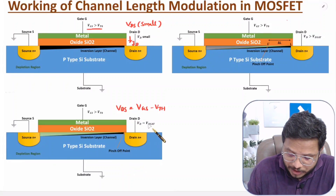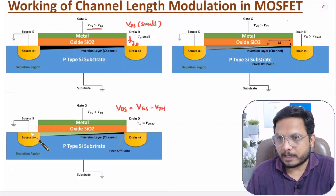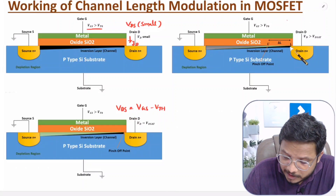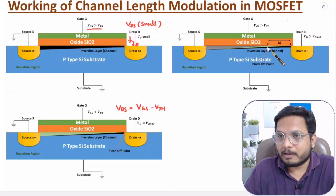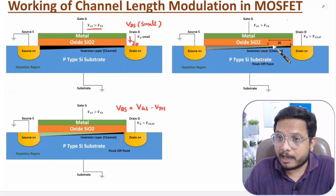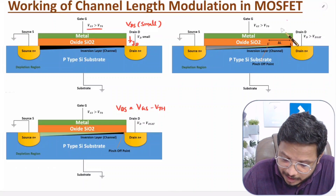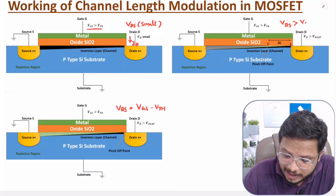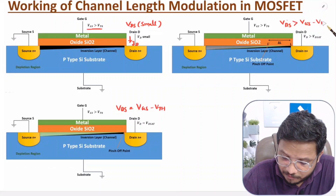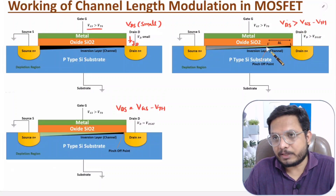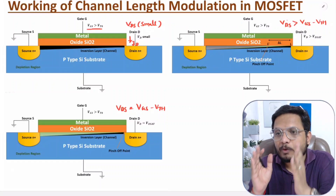If you further increase VDS voltage beyond saturation, the pinch-off point shifts and the length of the channel decreases by a value delta L. So when VDS is greater than VDS_sat — that is, greater than VGS minus VTH — the length of the channel decreases. The higher the value of VDS, the lower the channel length.